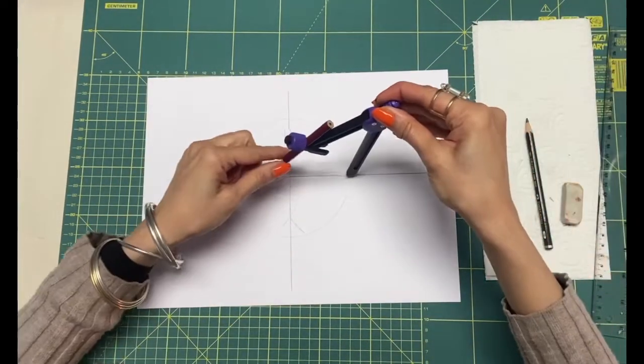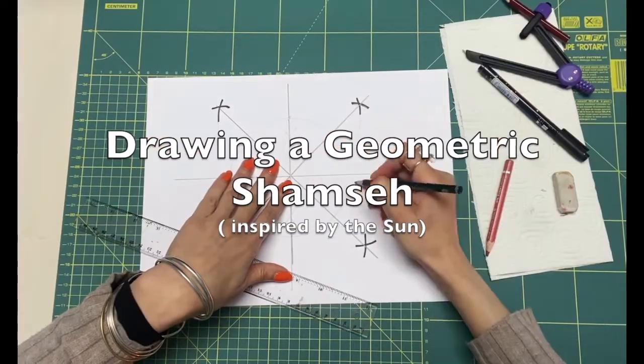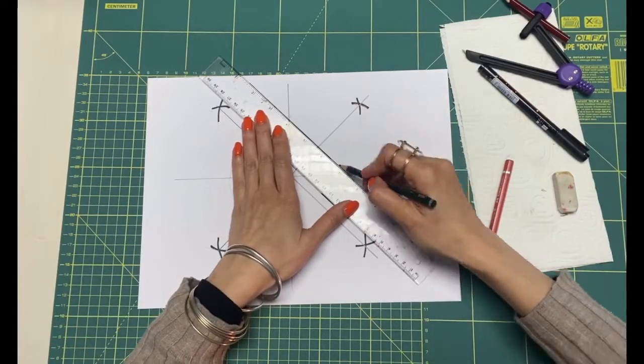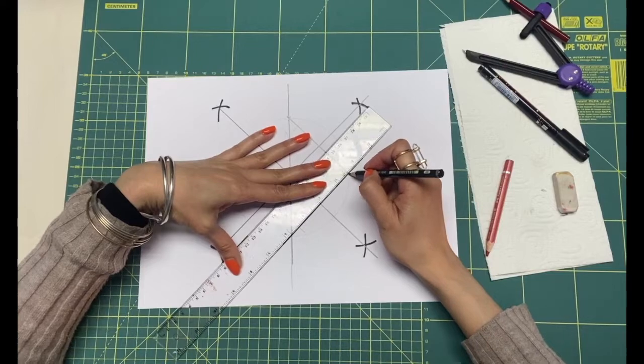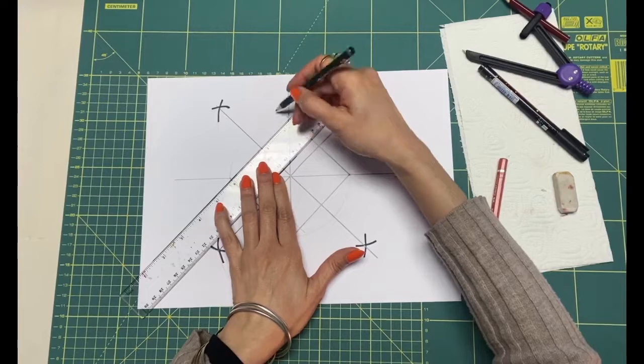Now we learned the basics. Let's draw a simple geometric Shamsa. Shamsa is an Islamic pattern inspired by the sun. The starting process is the same. Divide the circle into six parts.